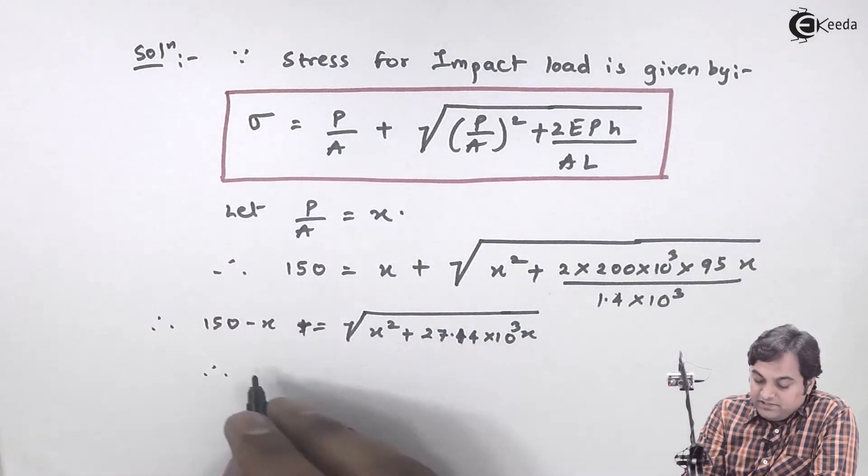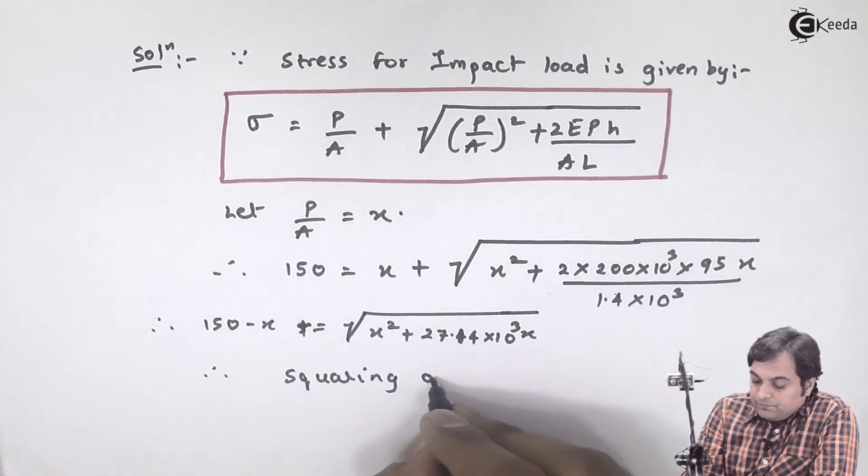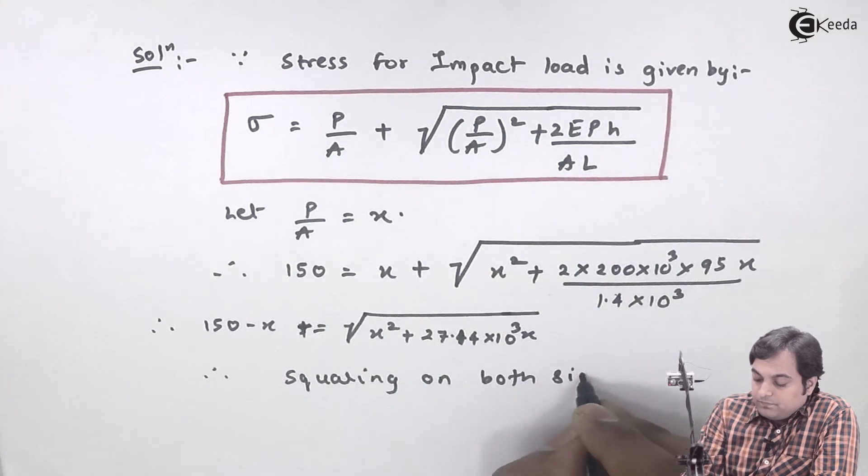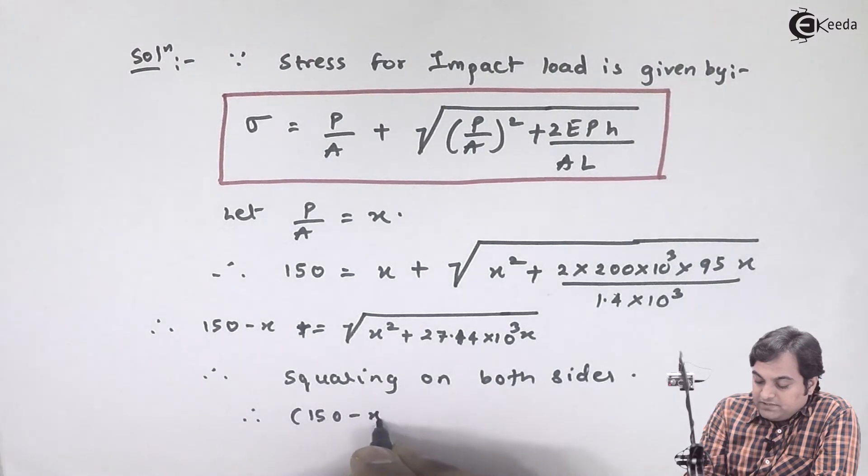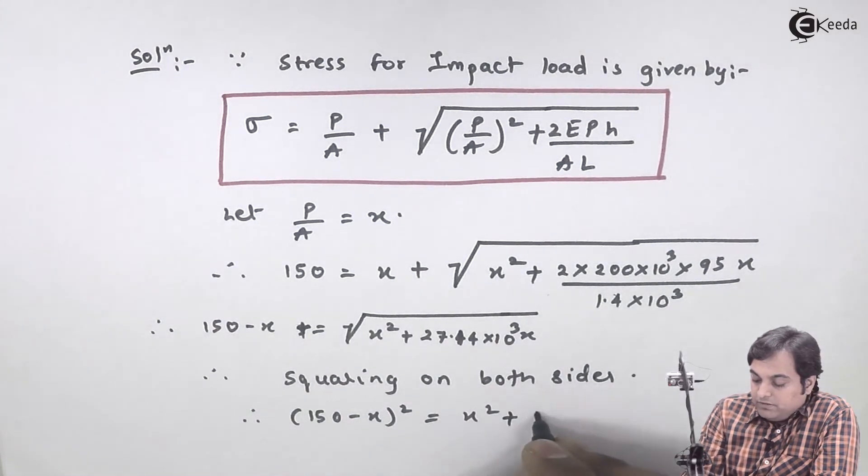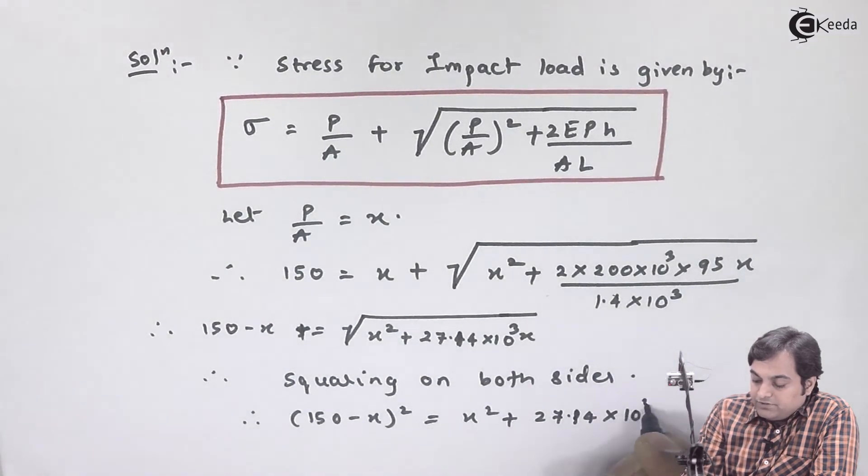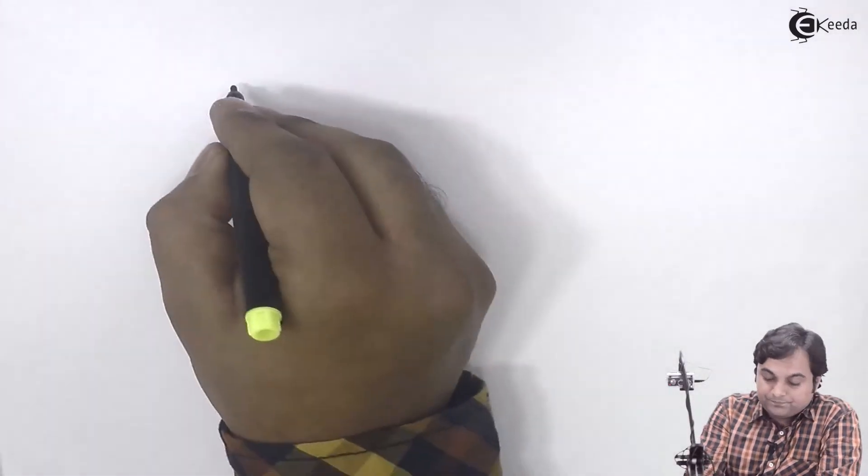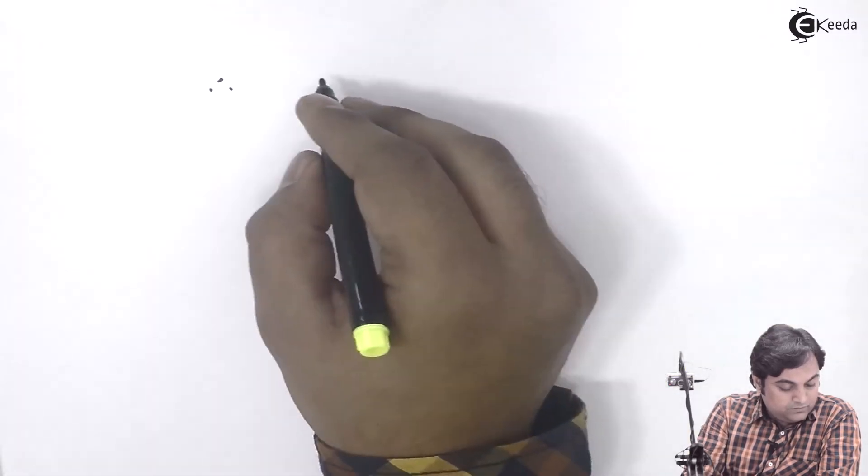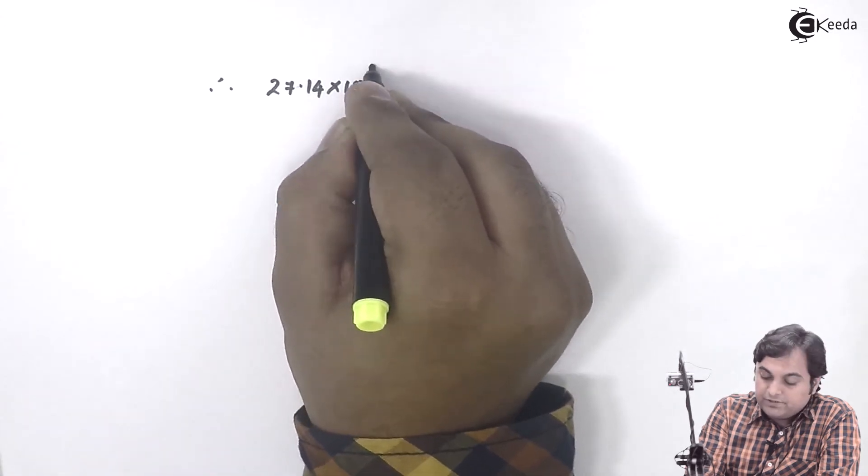term. Finally, squaring on both sides, therefore (150 - X)² = X² + 27.14×10³X. If I go on simplifying this term, I will be getting this as 27.14×10³